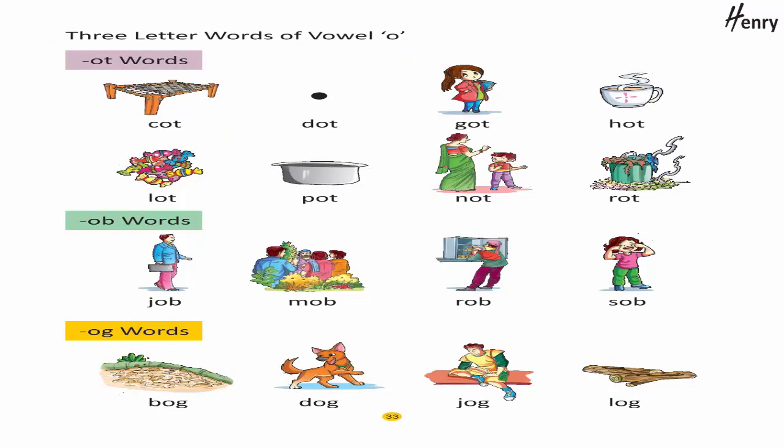Three-letter words of vowel O. -OT words: Dot, Got, Hot, Lot, Pot, Not, Rot.